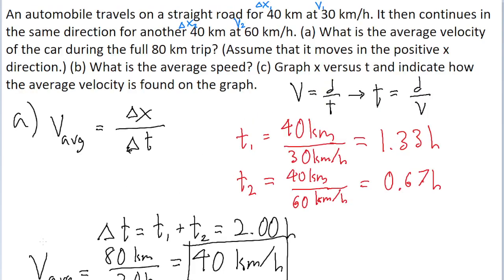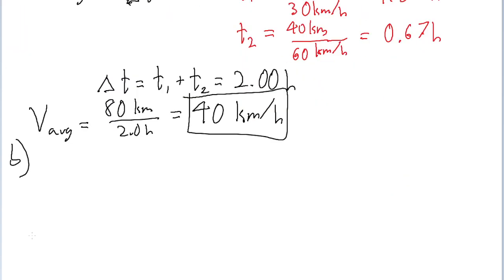Here's the thing though. In this problem, we are specifically told that both sections of the journey, the car is traveling in the same direction. The car is only traveling in a straight line.